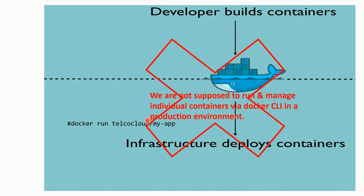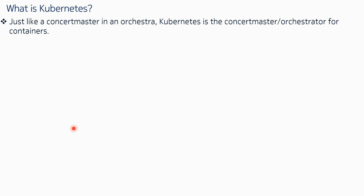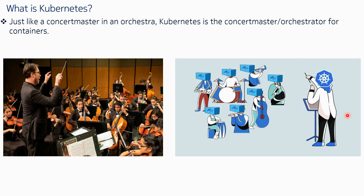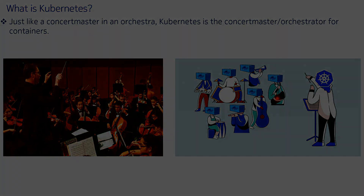However, we are not supposed to run and manage individual containers via Docker CLI in a production environment. In production there may be hundreds or thousands of individual containers running on top of your infrastructure, and you are not supposed to manage every container individually using Docker CLI. That's where Kubernetes comes into picture. Just like a concert master in an orchestra who manages all the musicians and gives them instructions, Kubernetes is the orchestrator — the concert master for containers — and it manages all the containers running in your infrastructure.